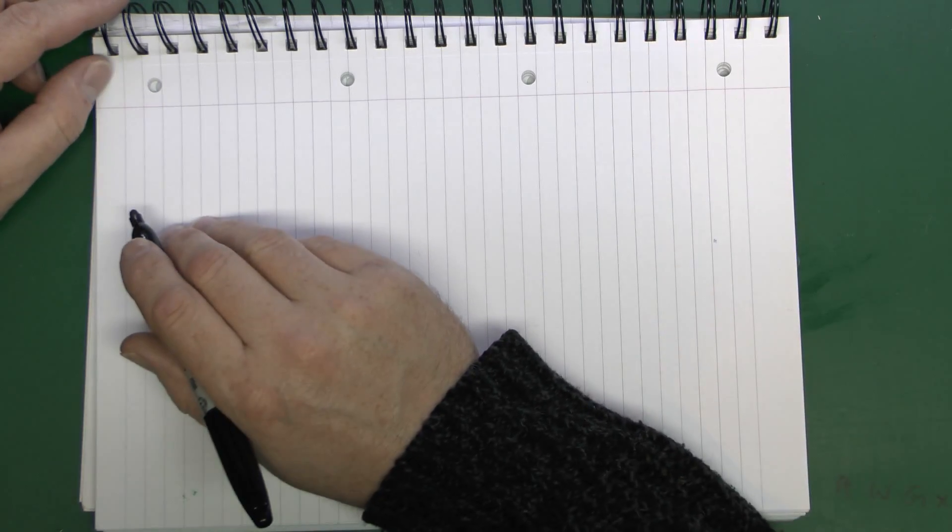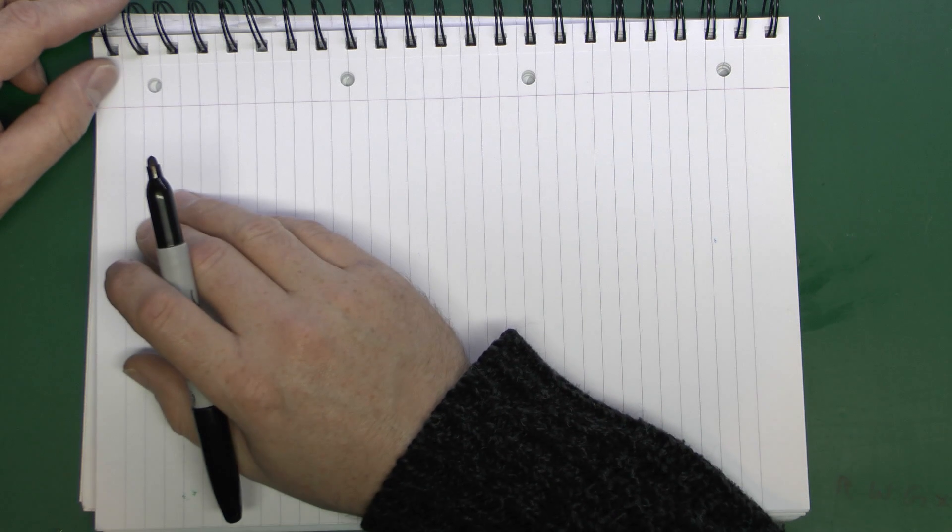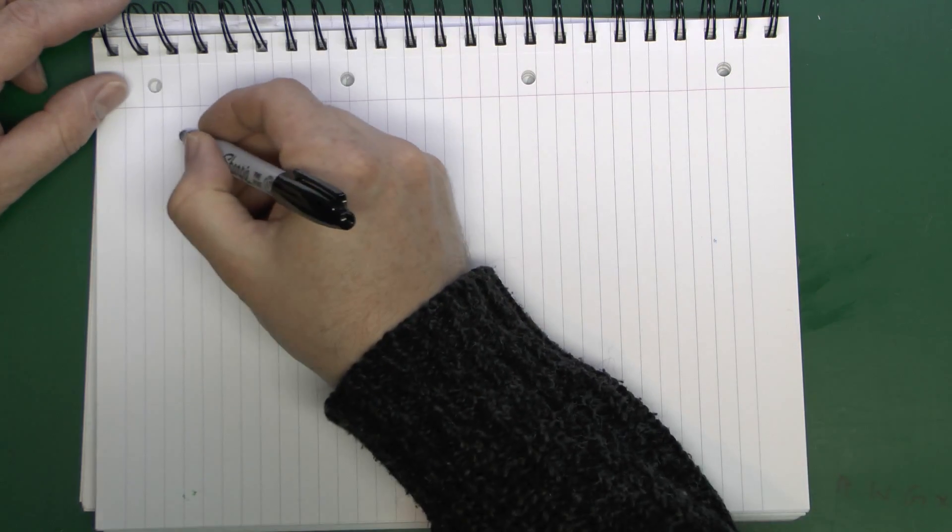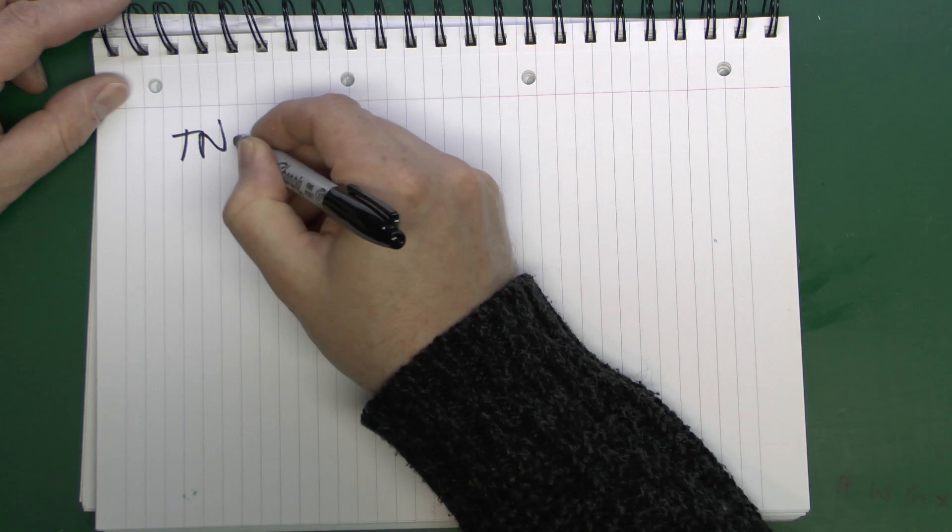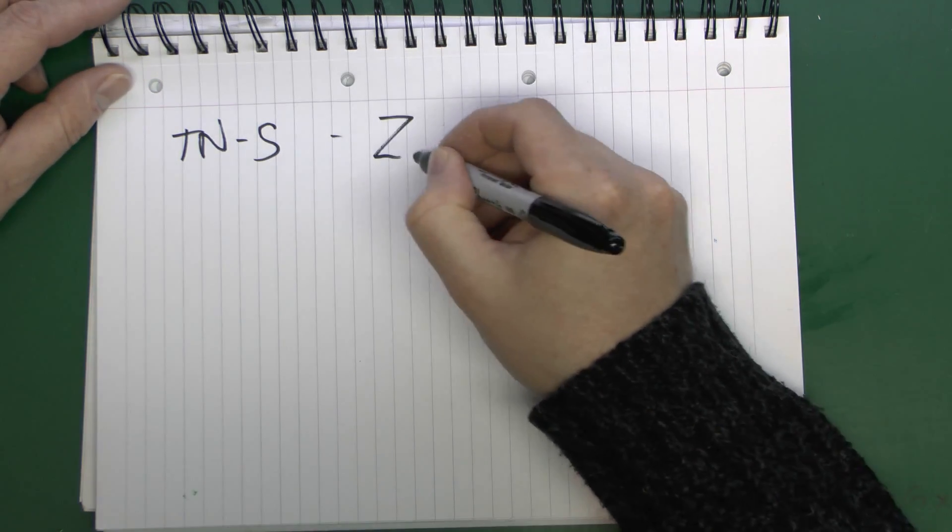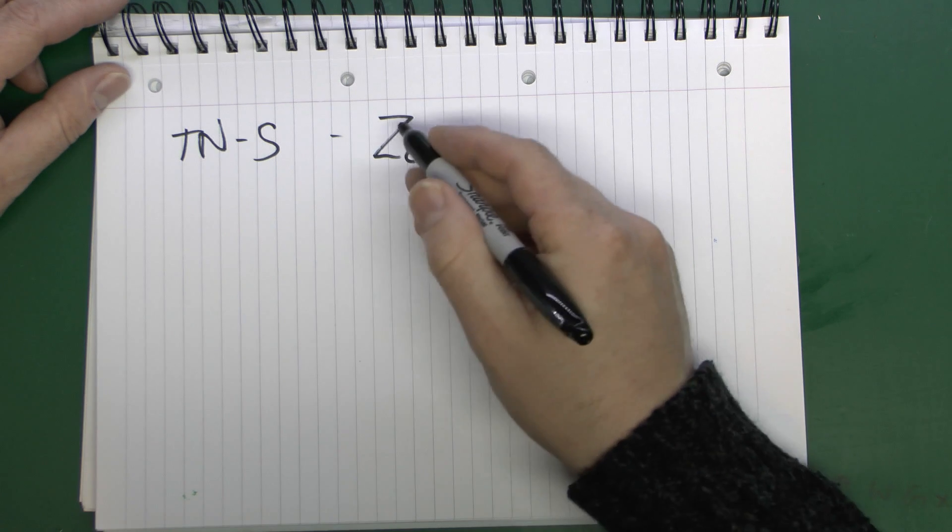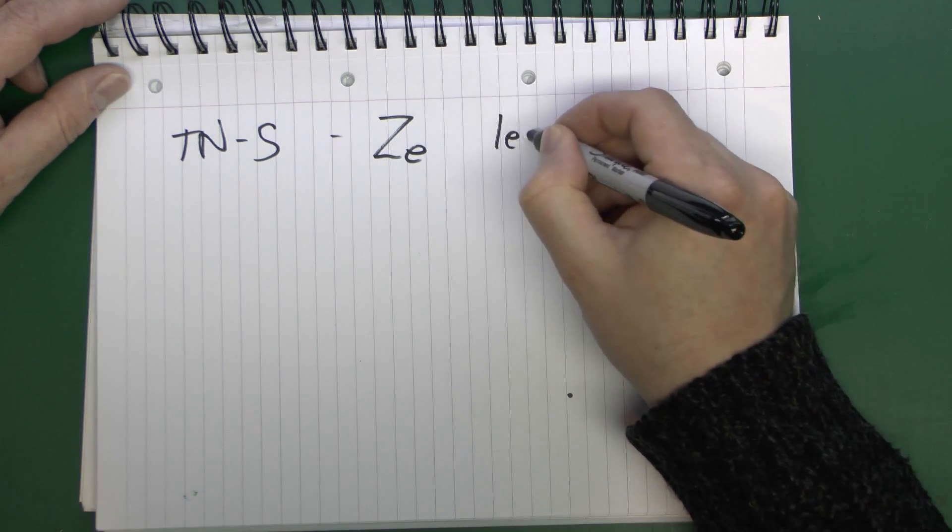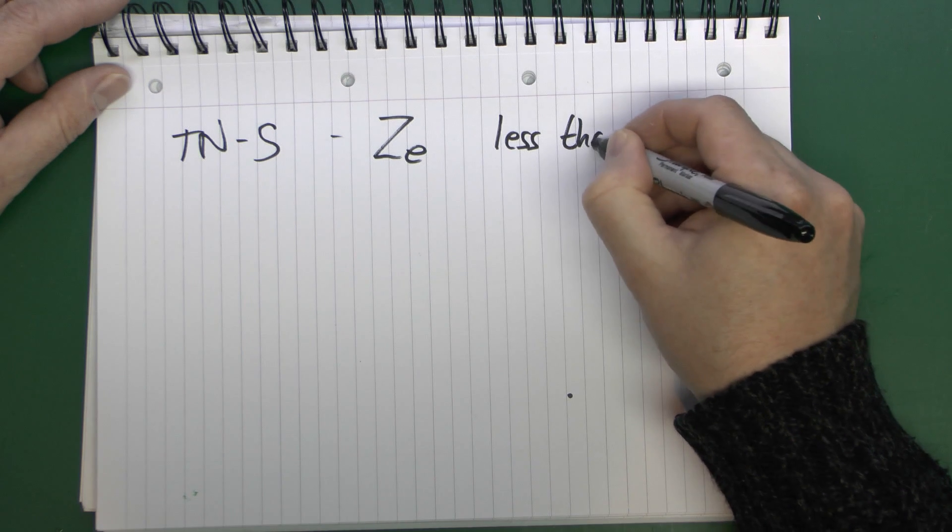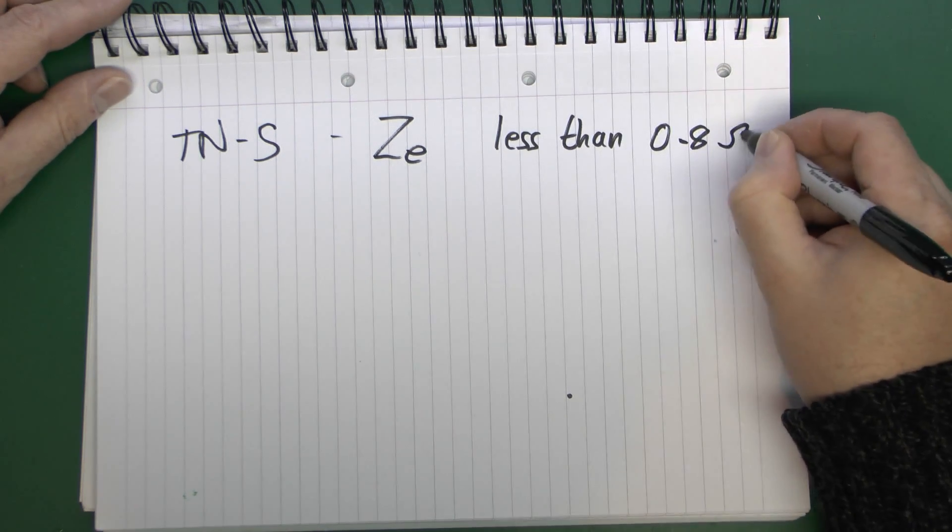Now in terms of what sort of values you should be getting, impedance is measured in ohms as it's a kind of resistance. Depending on the type of earth you have, the values you want to see are within the sort of ranges. So if you have a TNS supply, and that's what we had previously with the separate conductor basically being the outer covering of the cable, then the external impedance or ZE should be less than 0.8 ohms.